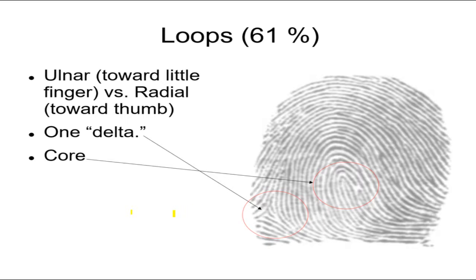The loops are also classified as being ulnar or radial, depending on whether this loop is pointed toward the thumb or the loop is pointed toward the little finger. So ulnar is toward the little finger, radial is toward the thumb. So that's a loop. Again, one delta and we see the core easily.